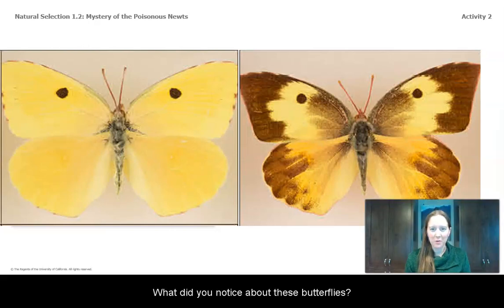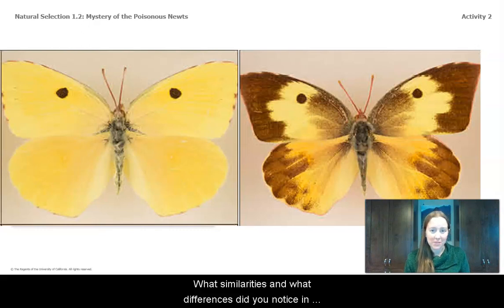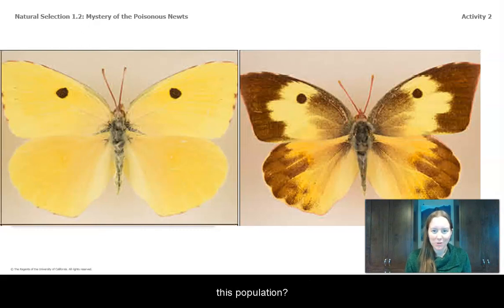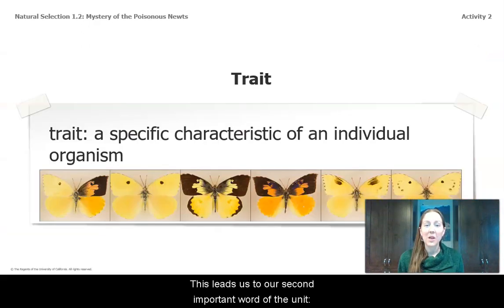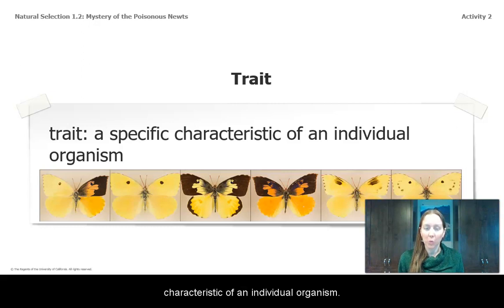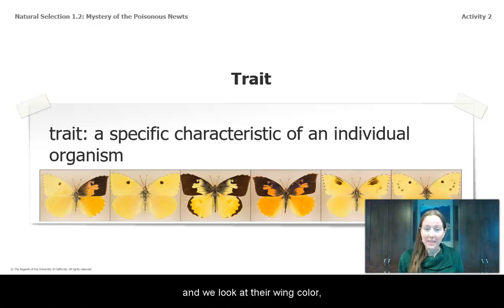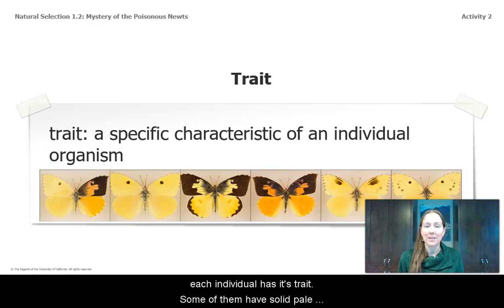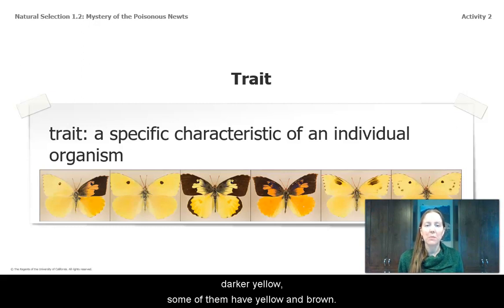What did you notice about these butterflies? What similarities and what differences did you notice in this population? This leads us to our second important word of the unit: trait. Trait is a specific characteristic of an individual organism. When we look at these butterflies and their wing color, each individual has its trait. Some of them have solid pale yellow, some have a solid darker yellow, and some have yellow and brown. Those are the traits of the individuals in this population.